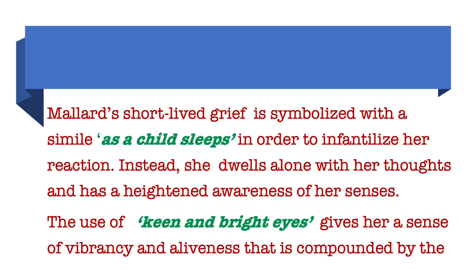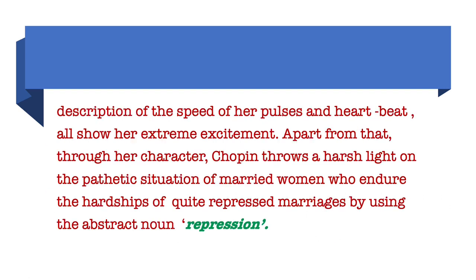Mallard's short-lived grief is symbolised with a simile — 'as a child sleeps' — in order to infantilise her reaction. Instead, she dwells alone with her thoughts and has a heightened awareness of her senses. The use of 'keen and bright eyes' gives her a sense of vibrancy and aliveness, compounded by the description of the speed of her pulses and heartbeat, all showing her extreme excitement. Through her character, Chopin throws a harsh light on the pathetic situation of married women who endure the hardships of repressed marriages, using the abstract noun 'repression.'